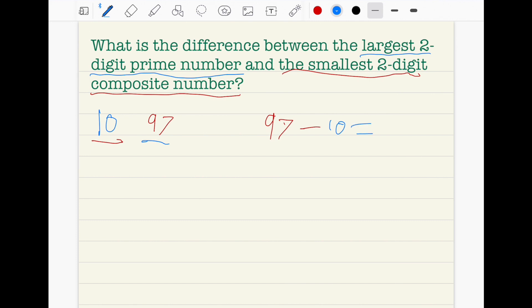And that equals eighty-seven. It says, what is the difference between ten and ninety-seven? The difference is just subtracting. So, ninety-seven subtract ten is eighty-seven. The difference between these two numbers is eighty-seven. And eighty-seven is the answer.